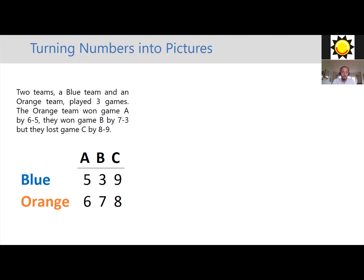The simplest way to visualize data is using a table. Here we can see the blue team, the orange team, the three games they played and the scores. Just having them laid out in a table makes it much more easy to see and interpret.